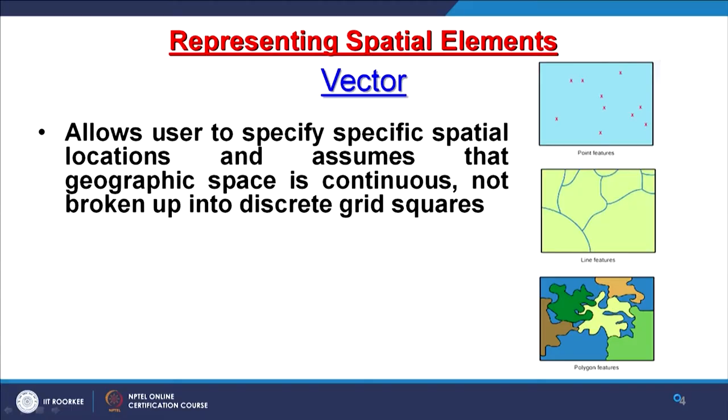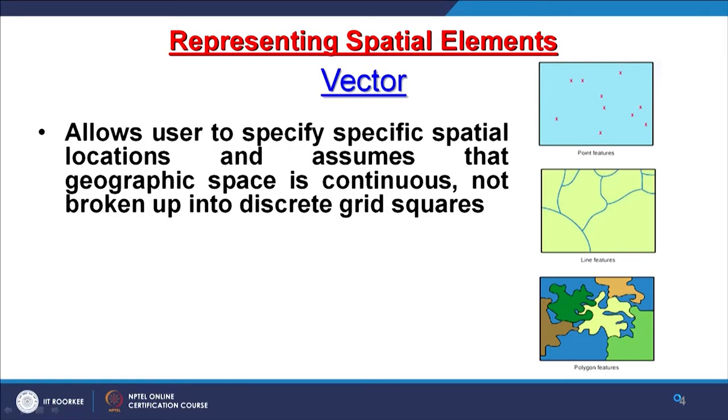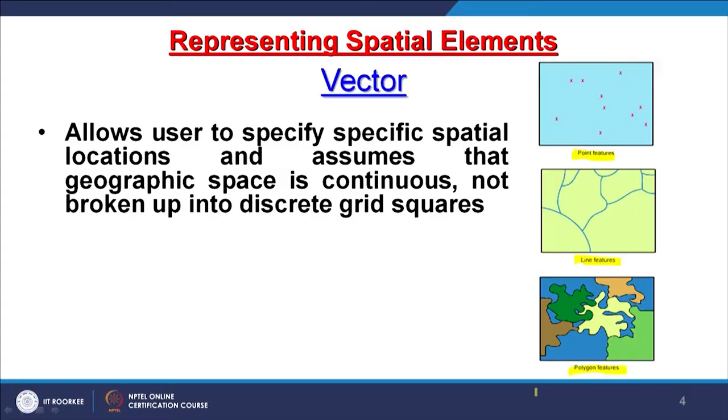Geographic space is assumed continuous — as you know, on the surface of the globe it is continuous, whether land, water body, sea, ocean, or any country or continent. That is why geographic space is continuous, and the same concept applies to the moon and Mars surfaces as well, where coordinate systems have also been developed. It specifies specific spatial locations. If it is point data, it will have x and y geographic location coordinates.